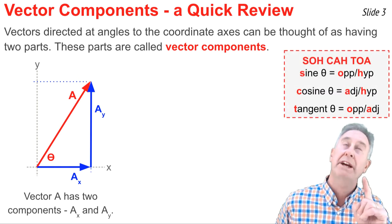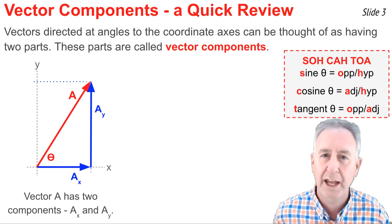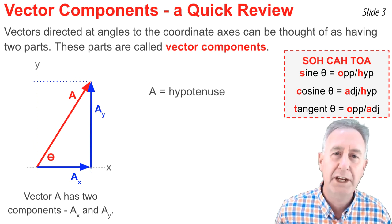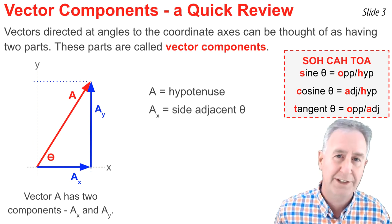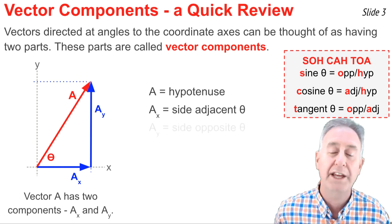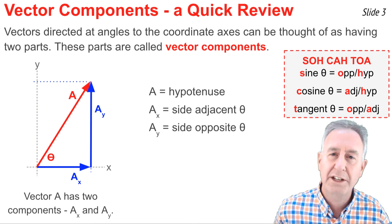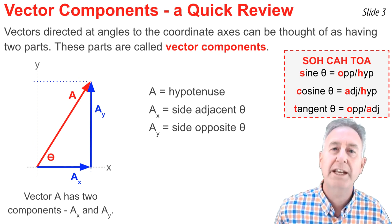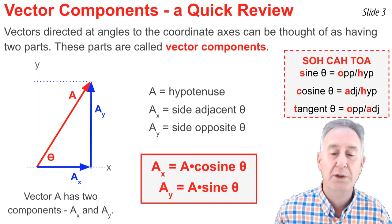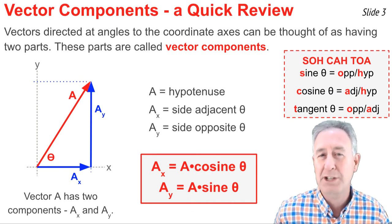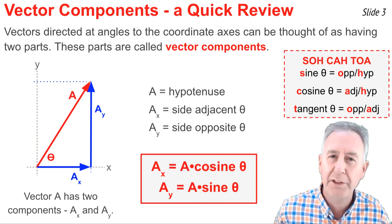And when we do, we feel more comfortable using right triangle trigonometry to relate the vector A to the vectors Ax and Ay. In this triangle, vector A is the hypotenuse. Vector Ax is the side adjacent to theta, and vector Ay is the side opposite theta. Given the equations for cosine, sine, and tangent, we can use them to find what Ax is in terms of A and theta. Ax is A times the cosine of theta, and Ay is A times the sine of theta. We'll be using these two equations quite regularly throughout this video.